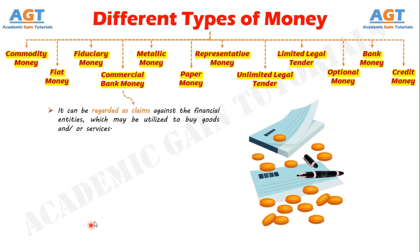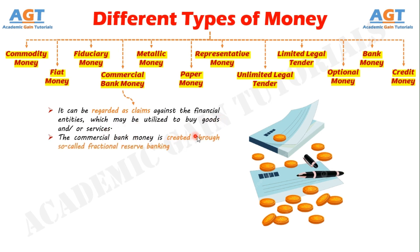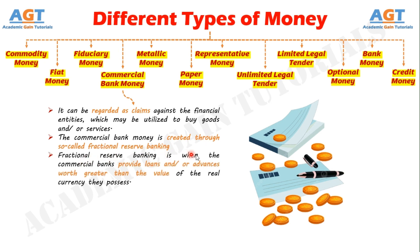Number 4: Commercial Bank Money. It can be regarded as claims against financial entities which may be utilized to buy goods or services. The commercial bank money is created through so-called fractional reserve banking, which is when commercial banks provide loans or advances worth greater than the value of the real currency they possess.